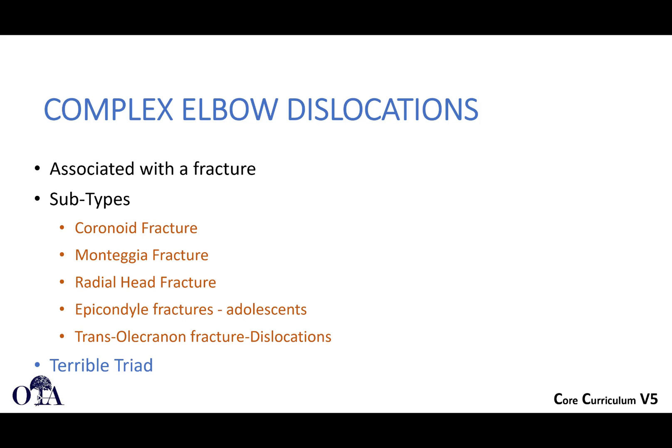A complex dislocation is the term used when talking about a fracture dislocation. These can be coronoid fractures, Monteggia fractures, radial head fractures, or epicondyle fractures in adolescents. You can also get the trans-olecranon fracture dislocation. The terrible triad is when you have an elbow dislocation with a coronoid and a radial head fracture — that will be covered in the next video. In this video, we'll focus on the other complex elbow dislocations.